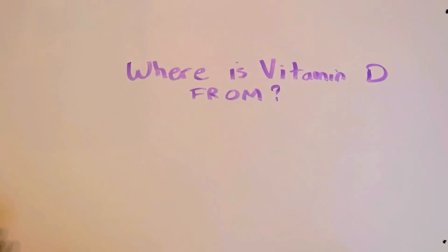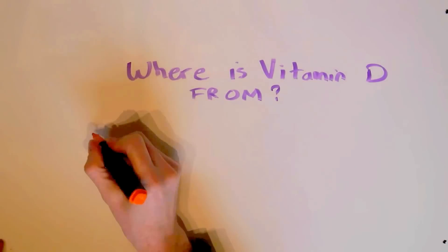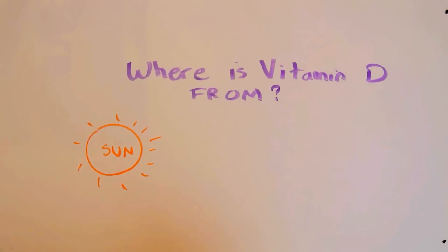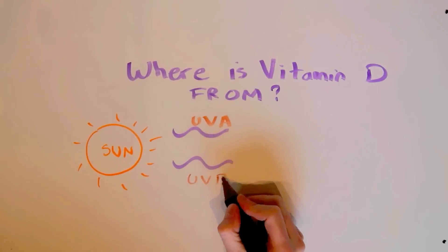So the first thing, where is vitamin D from? Well, as you've probably already guessed, it comes from the sun. That's not entirely accurate. It's our skin that creates it from the UVB rays.